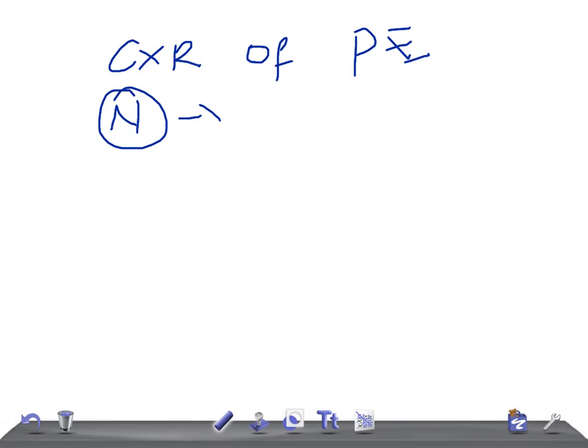So let's talk about the chest x-ray findings of pulmonary embolism. The first is what you call Westermark sign.